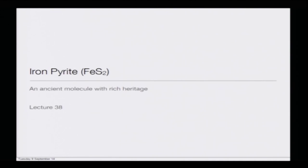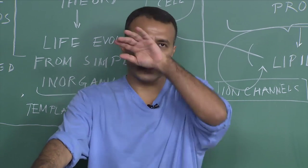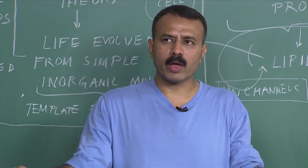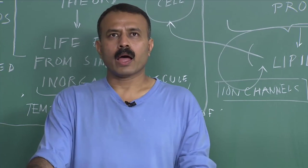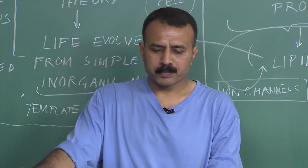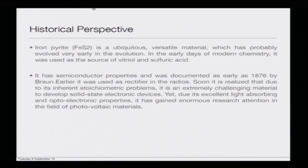Today's class is on iron pyrite — an ancient molecule with a rich heritage. I will expose you to iron pyrite and end the class with what possibilities we are heading toward. From a historical perspective, iron pyrite is a ubiquitous molecule available all over the place — if you walk by a road near a drain and poke slightly underneath where there is a lack of oxygen, you will find iron pyrite present there. It is a versatile material which probably evolved very early in evolution.